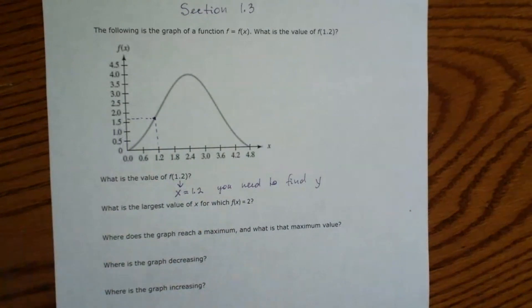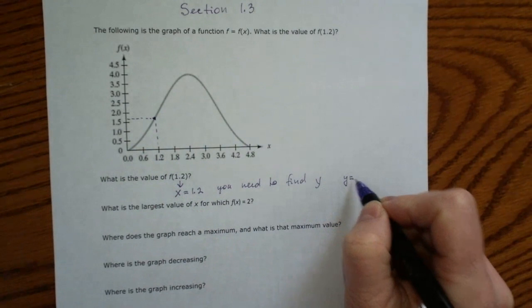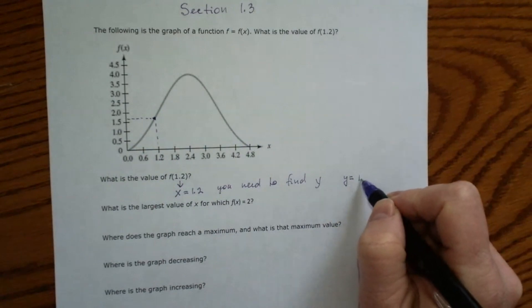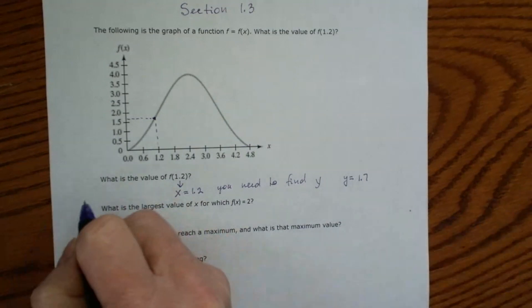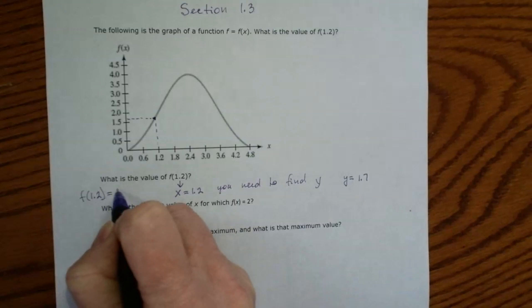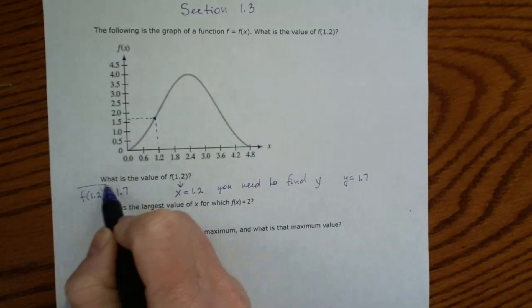And because it's a graph, we will find an approximate number. So the y is equal to about 1.7. So the answer for this question is f of 1.2 is equal to 1.7. And this is the final answer.